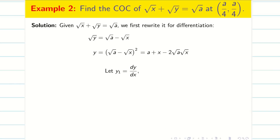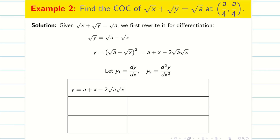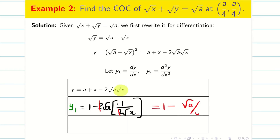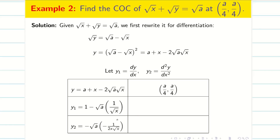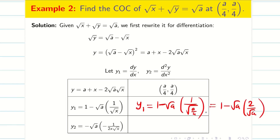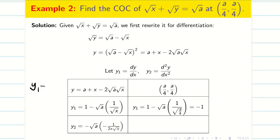Taking y₁ = dy/dx and y₂ = d²y/dx², differentiating y gives: y₁ = 0 + 1 − 2√a · (1/(2√x)), and the 2's cancel, giving y₁ = 1 − √a/√x. For y₂, the constant term vanishes and we differentiate −√a/√x, so y₂ = −√a · (−1/(2x√x)) = √a/(2x√x). The given point is (a/4, a/4). Substituting into y₁: 1 − √a · (2/√a) = 1 − 2 = −1, so y₁ = −1.